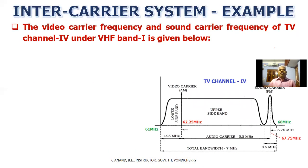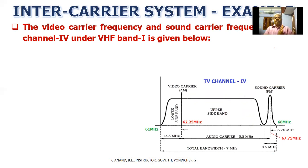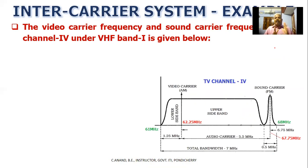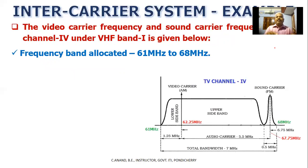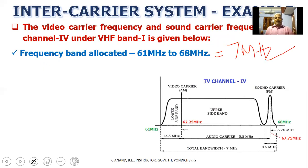Let us look at the video carrier frequency and sound carrier frequency of TV Channel 4 under VHF Band 1. Channel 4 has a frequency range of 61 MHz to 68 MHz, giving a bandwidth of 68 minus 61 equals 7 MHz. So Channel 4 is a 7 MHz channel, with lower frequency 61 MHz and upper frequency 68 MHz.